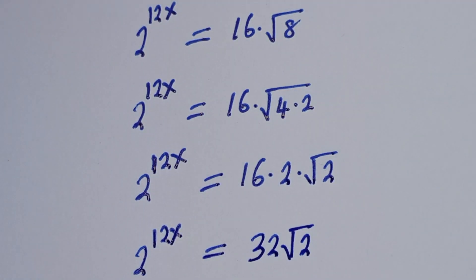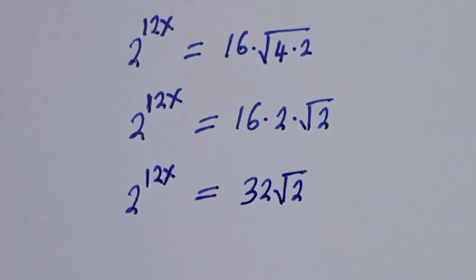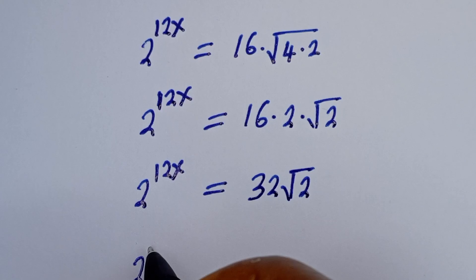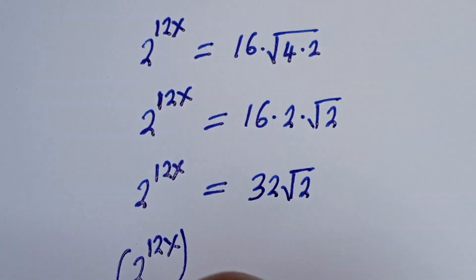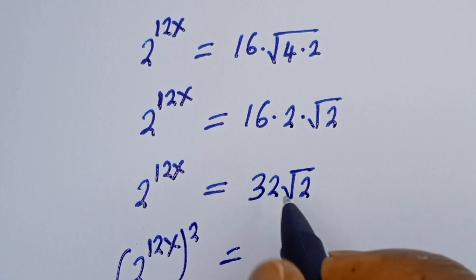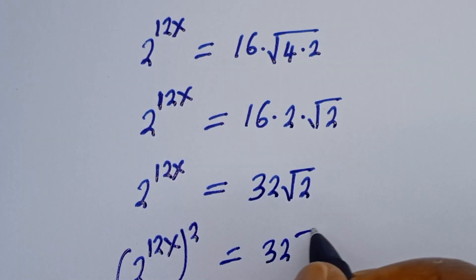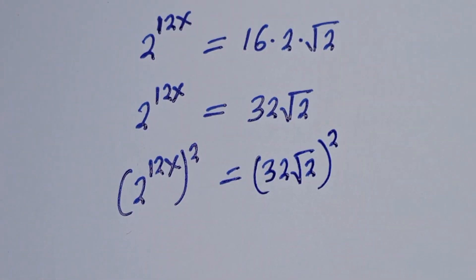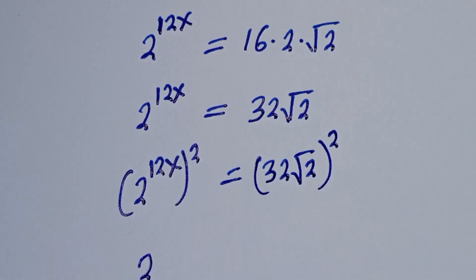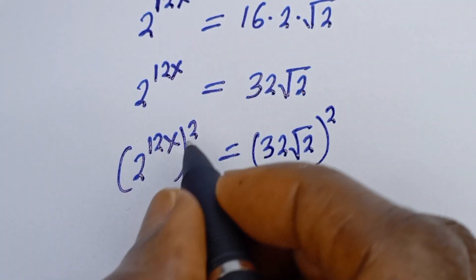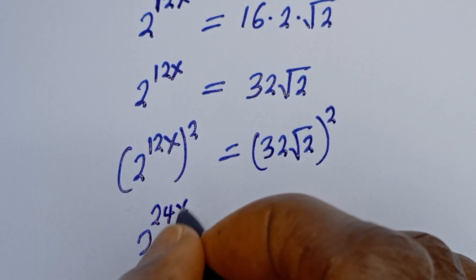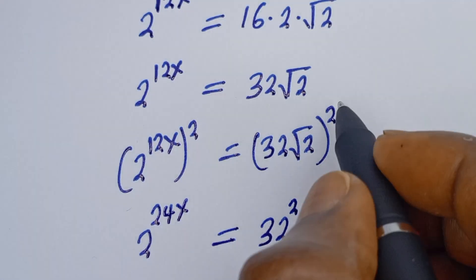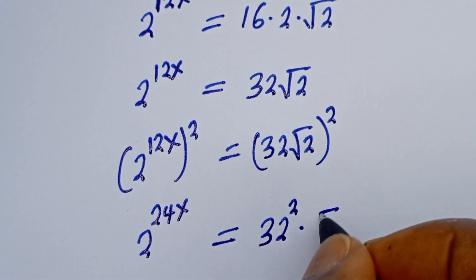Now let's take the square of both sides again. That is, 2 to the power of 12s, squared, is equal to 32 root 2, then to the power of 2. This gives 2 to the power of 24s.